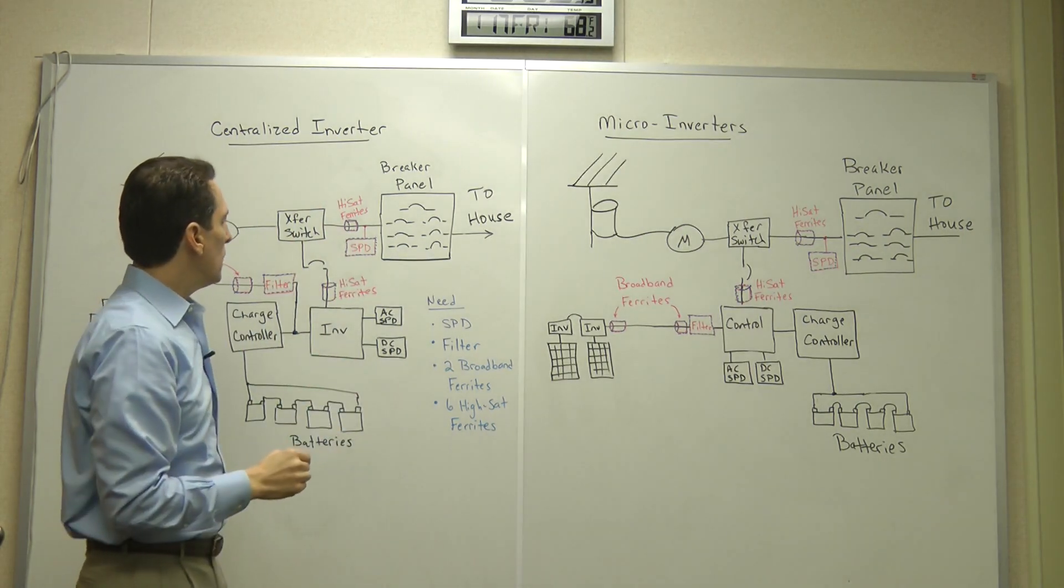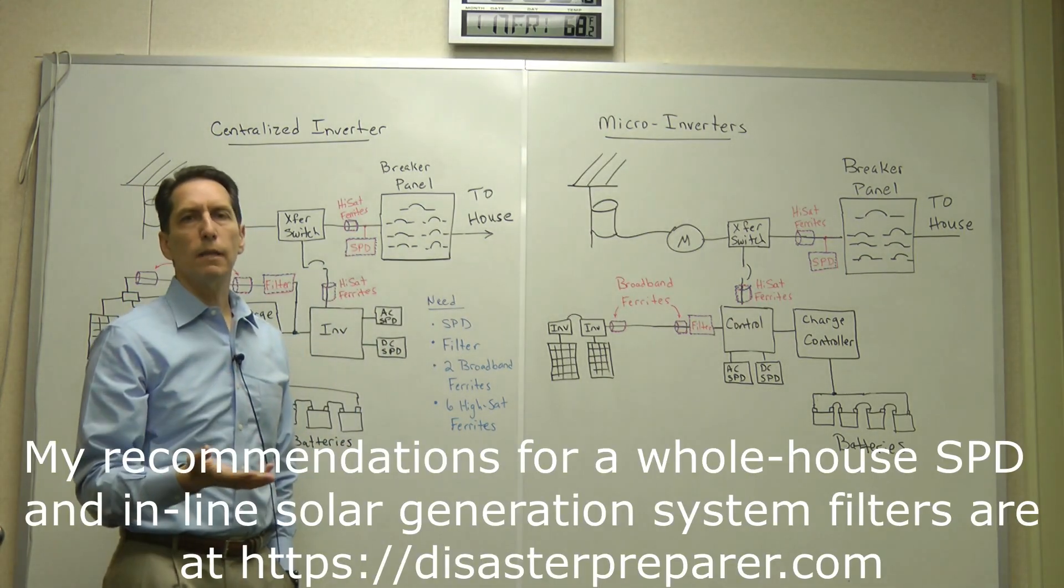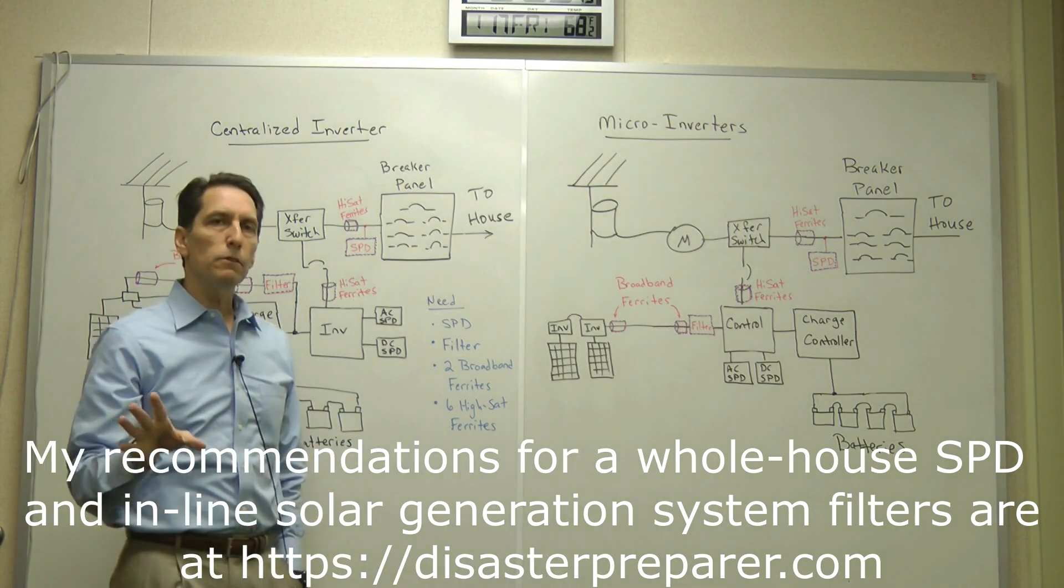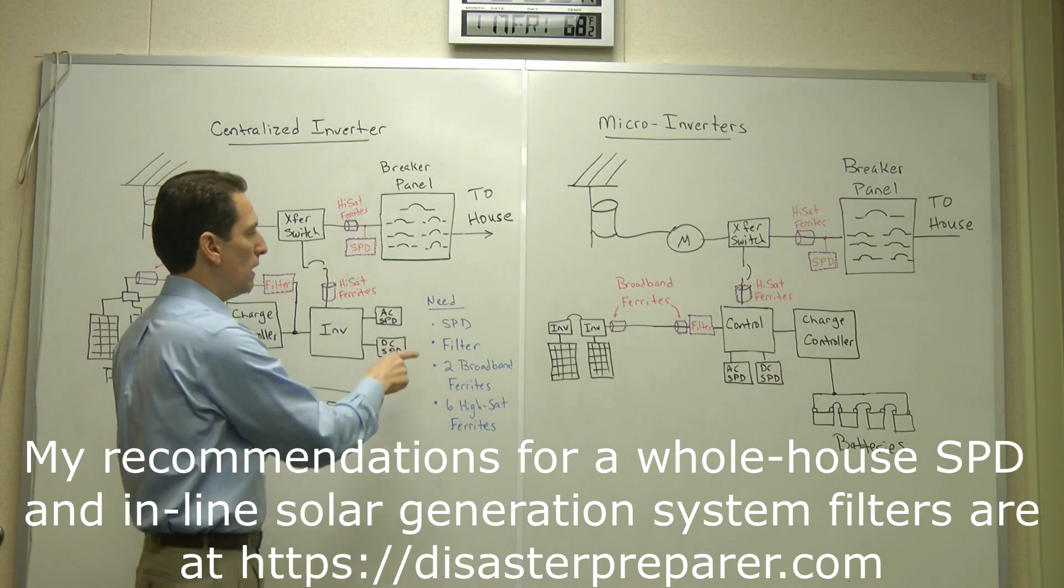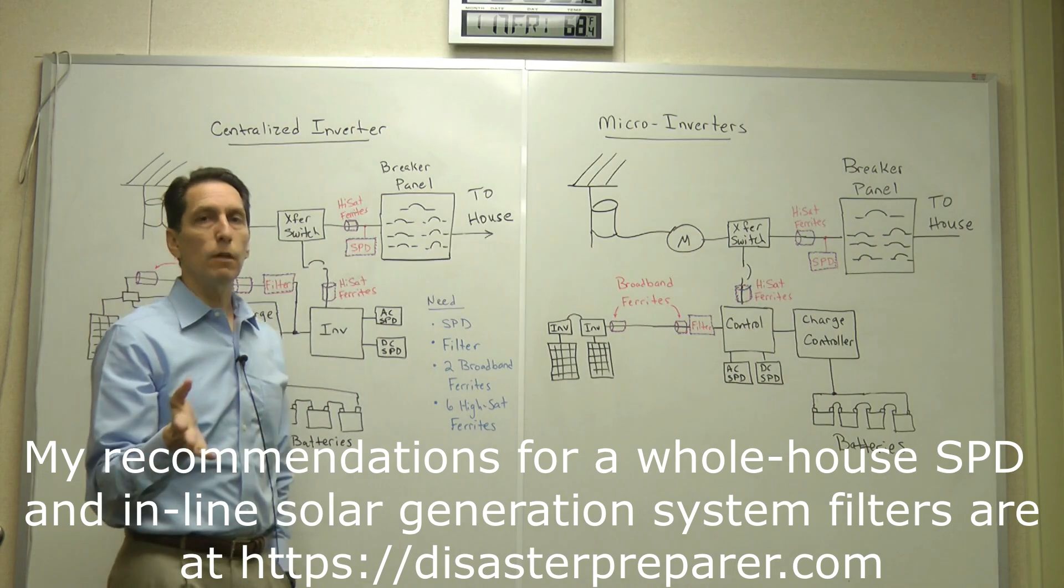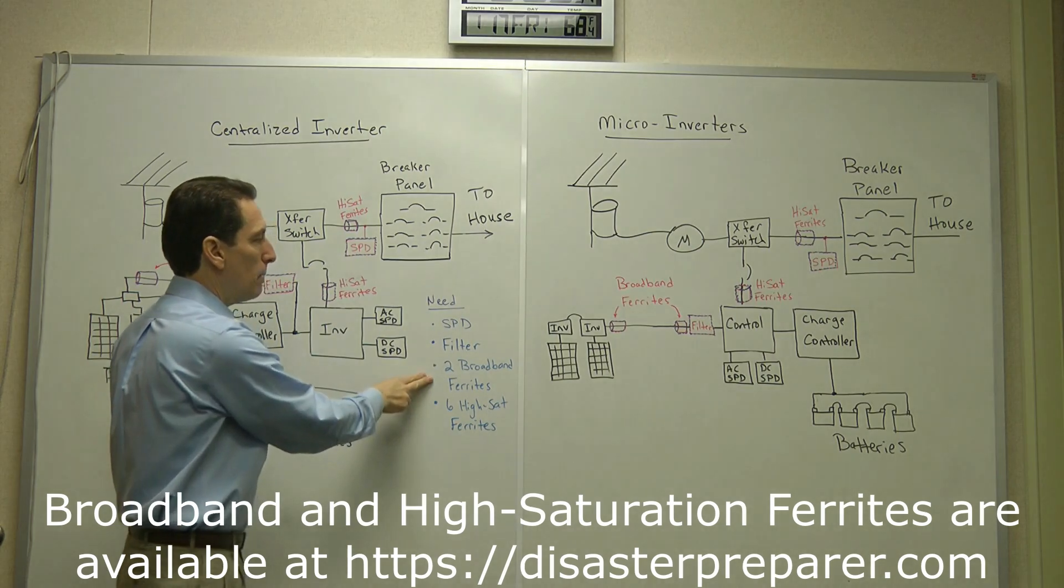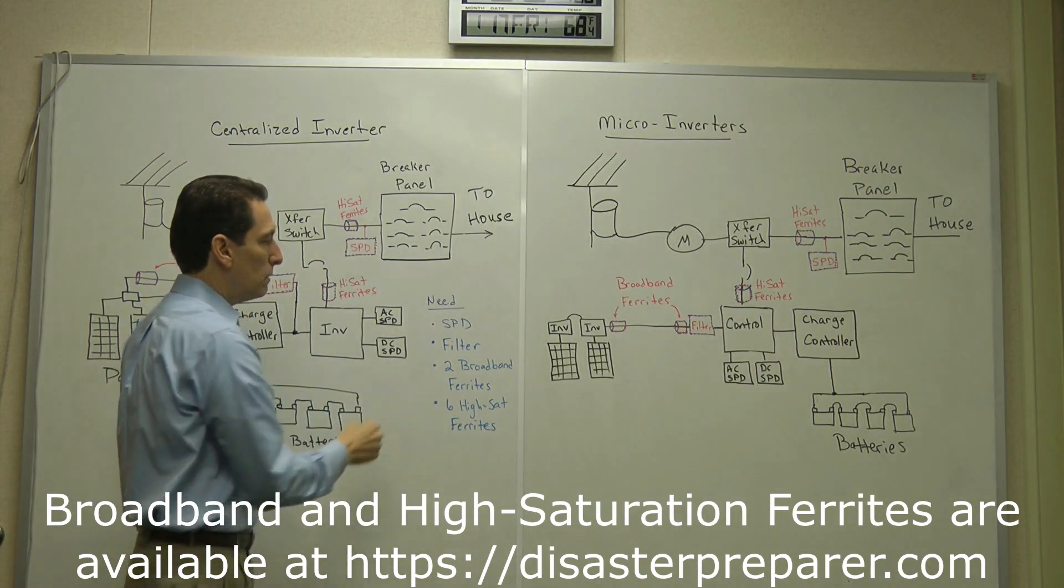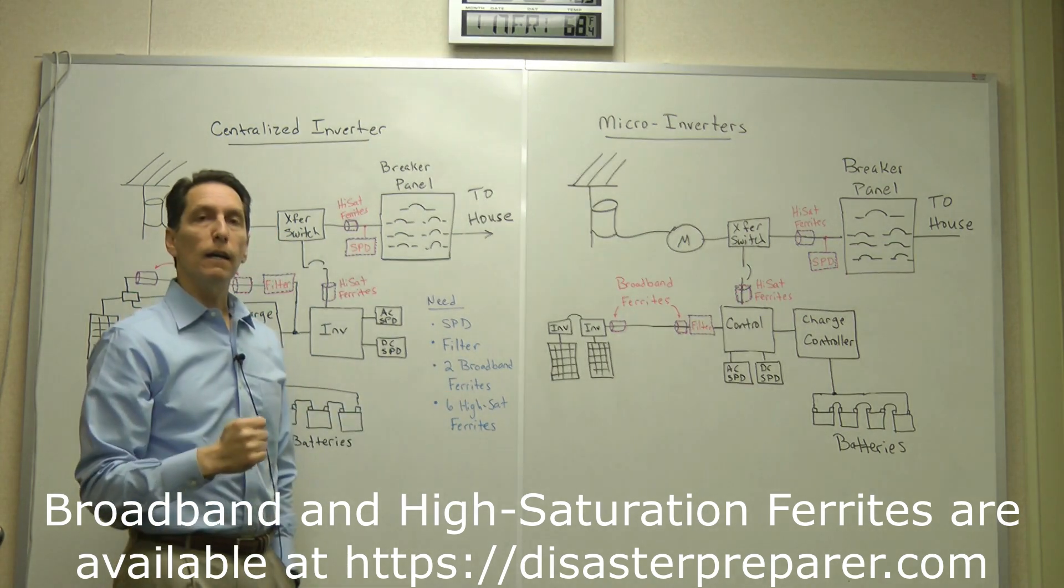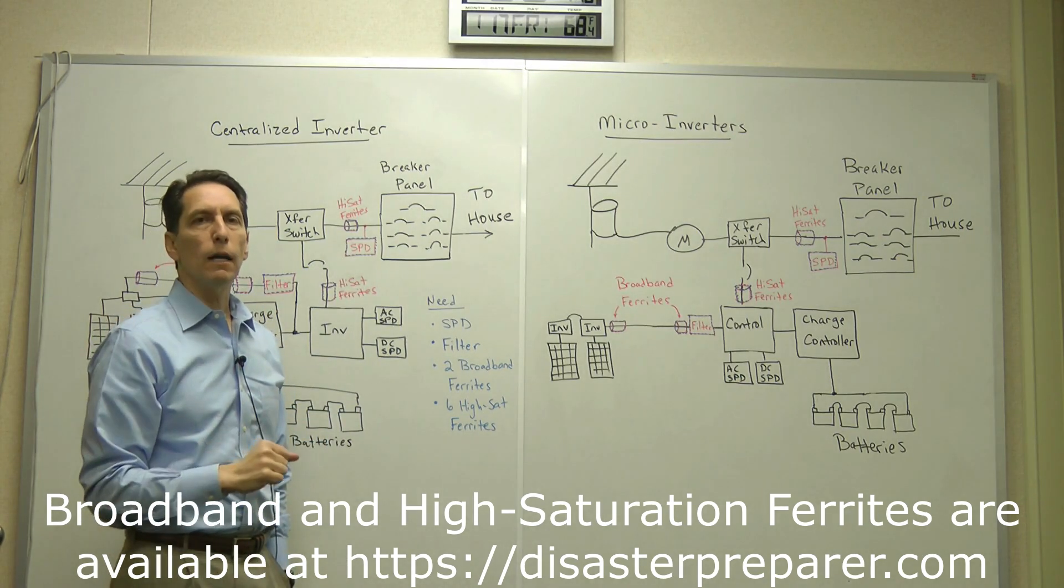You can find surge protection devices all over the place. I recommend one on my website. I don't get anything from recommending it. I just recommend it because I think it's a quality product. But you can find others, lots of good surge protection devices. The filter, I'll put the part numbers for the Schaffner filters on my website. You can look those up. I'm not trying to make anything off those, I just recommend them because they're good quality products. And then I sell the broadband ferrites, you can find those on the website, and the specially modified high saturation ferrites. And I did a whole video on those if you're wondering what that is and what it means to be high saturation. So if you have any questions, feel free to post them. I hope this was helpful.